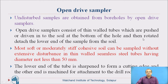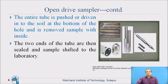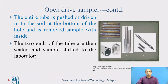The lower end of the tube is sharpened to form a cutting edge, and the other end is machined for attachment to the drill rod. The lower end of the sampler is sharpened so it can penetrate the ground. The entire tube is pushed or driven into the soil at the bottom of the hole and the sample is removed from inside.